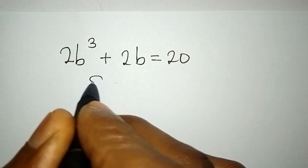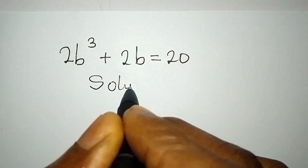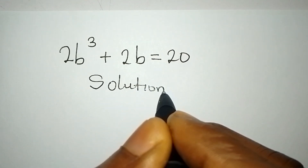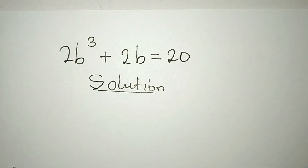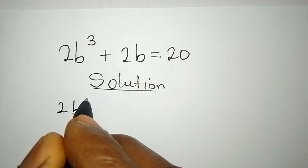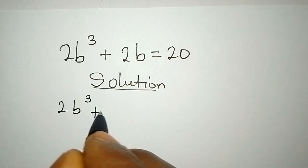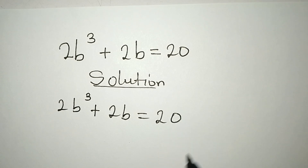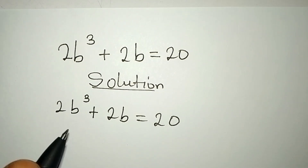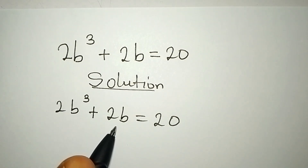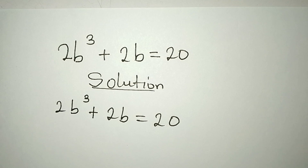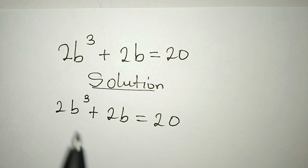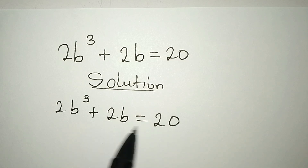Hello everyone. Let's provide the solution to this problem. We have 2b to the power of 3 plus 2b equals 20. Because we have 2b here and 2b here, somebody might want to add both of them, but that would be wrong. So what do you do? Reduce this equation to a simpler term.